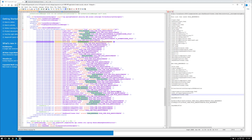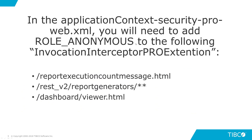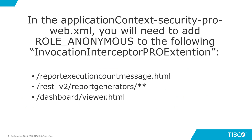The second part we're going to look at: once we've added all those ROLE_ANONYMOUS entries to the first file, in the applicationcontext-security-pro-web.xml, we'll need to add ROLE_ANONYMOUS to the invocation interceptor pro extension. We're going to need to add ROLE_ANONYMOUS to three areas there.